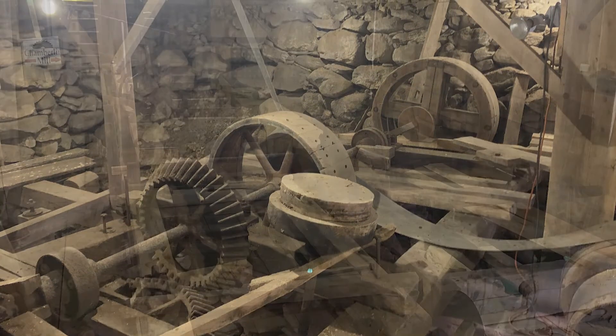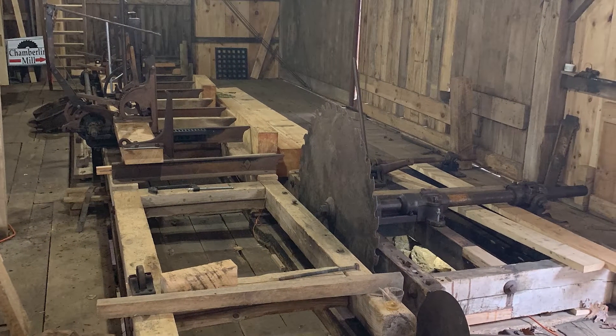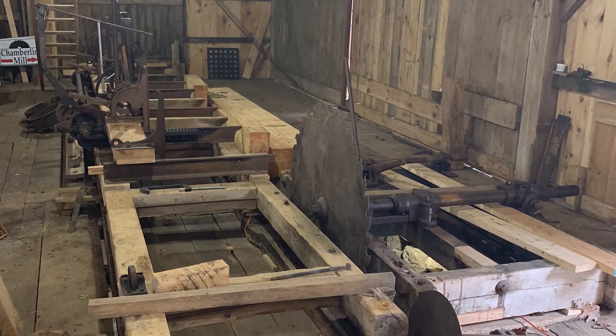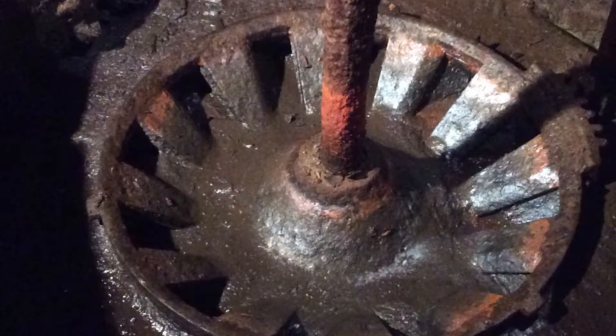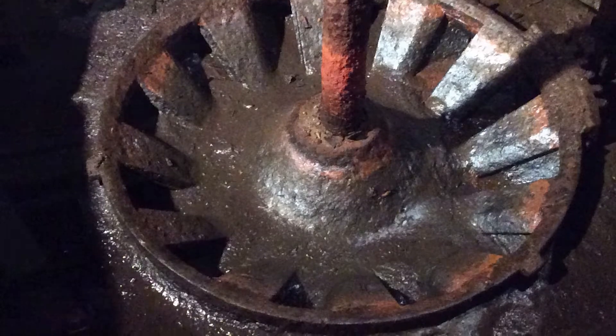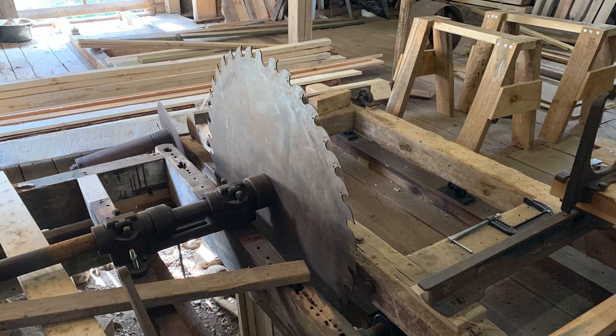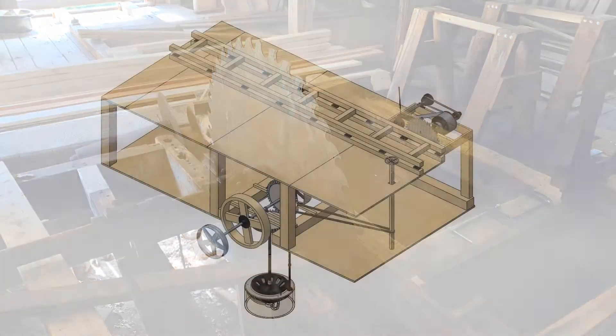To run the mill, workers would first fill the mill pond with water for the day and then perform various maintenance tasks such as cleaning out the trash rack and checking the turbine for debris, ice, or anything else that might impede its operation. They also oil and lubricate all bearings and shafts and disconnect any belts to run machinery other than the main saw.